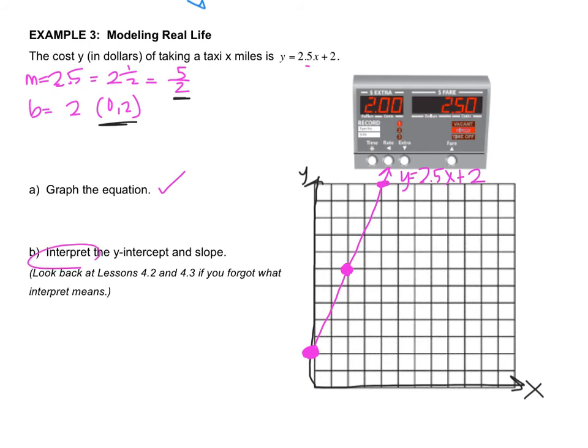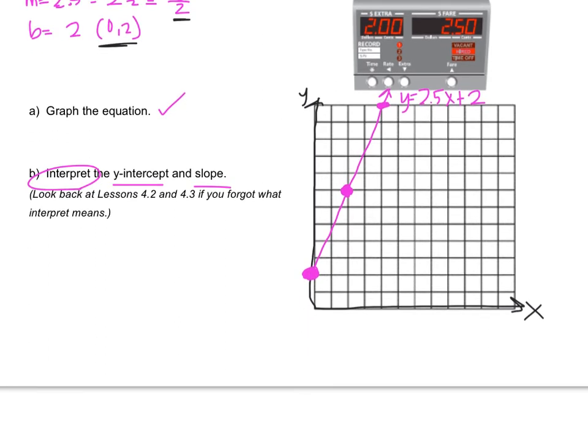Letter B says to interpret the y-intercept and the slope. We've always interpreted the slope, so we should be able to do that. If you don't remember interpreting, go back to lessons 4.2 and 4.3. Interpret means to write a sentence using labels. The easier one is the slope. 2.5 over 1 is the slope, and that stands for dollars and miles. So 2.5 means you pay $2.50 for every mile.